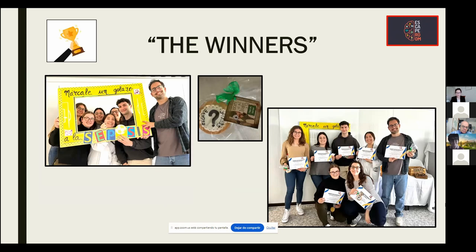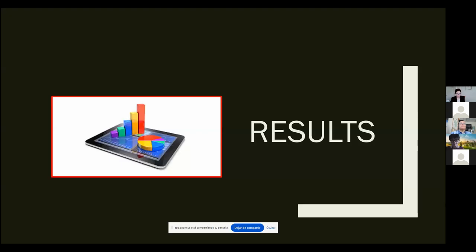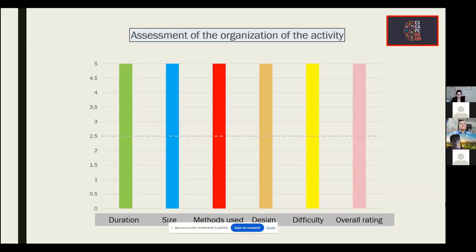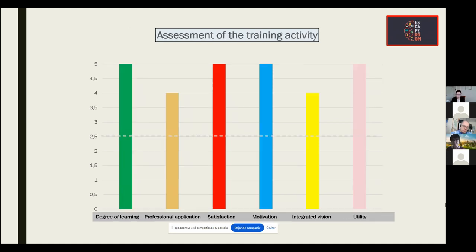Winners receive an accredited diploma and a biscuit as a souvenir of the experience. Scores related to the organization of the activity are all close to five points — the maximum possible — evaluated by different items such as duration of activity, size, method of use, design, difficulty, and overall rating. The assessment of the training activity is evaluated by items like degree of learning, professional application, satisfaction, motivation, integrated vision, and utility. All scores are close to the maximum possible.